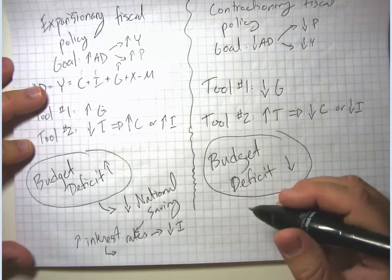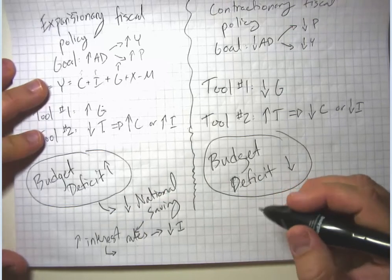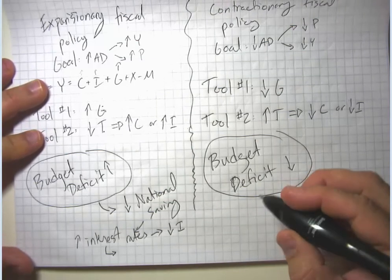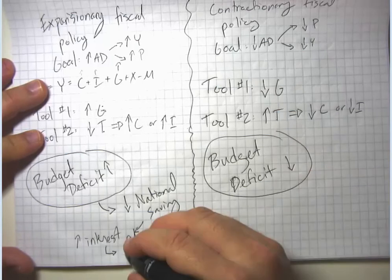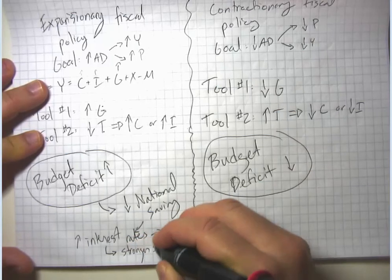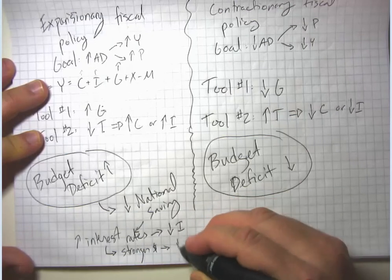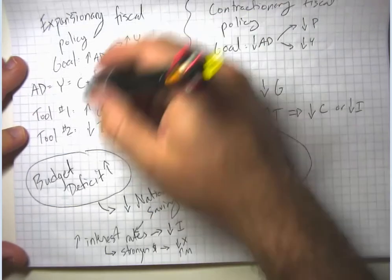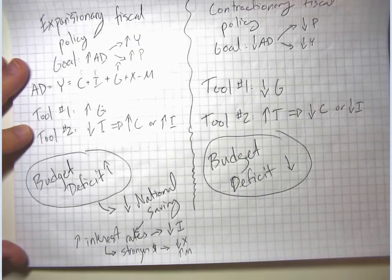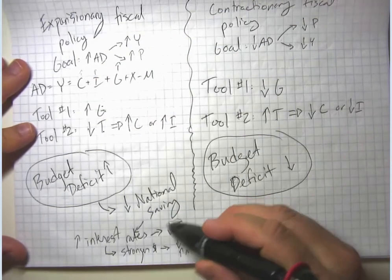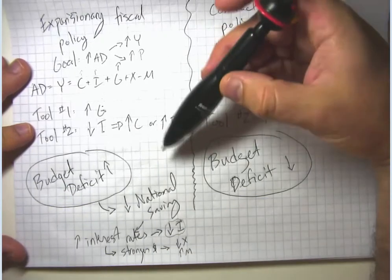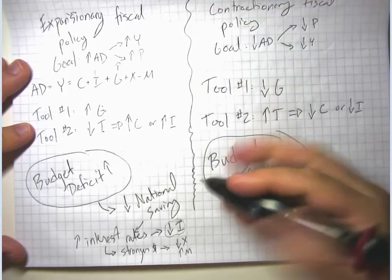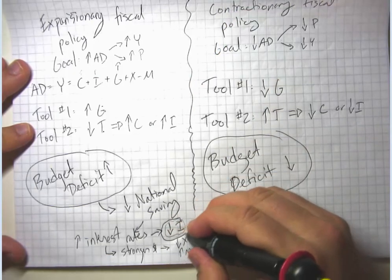A little less obviously, if real interest rates are higher, U.S. assets look more appealing to foreign investors. Foreign investors are going to want to buy dollars so they can invest in the U.S., giving us a stronger dollar. And a stronger dollar means lower exports and higher imports. So these potentially offset some of the stimulus, and this also impacts long-run economic growth — which is why economists say we need to worry about budget deficits.